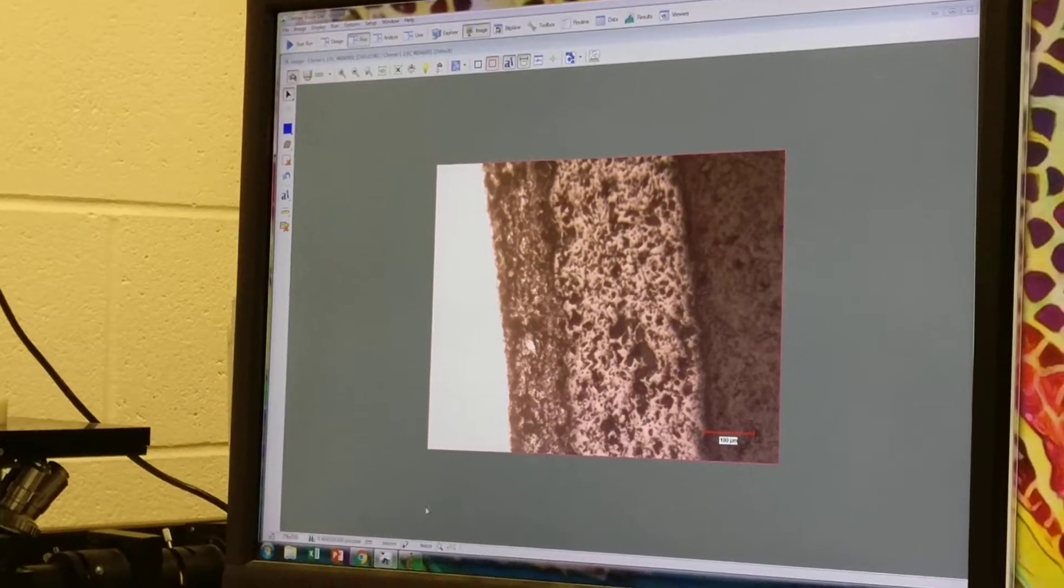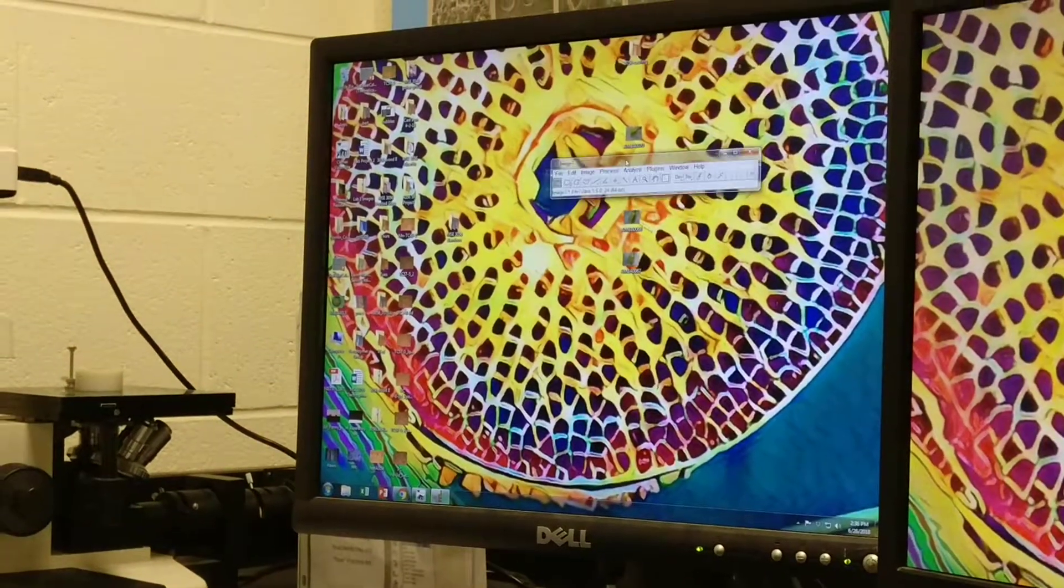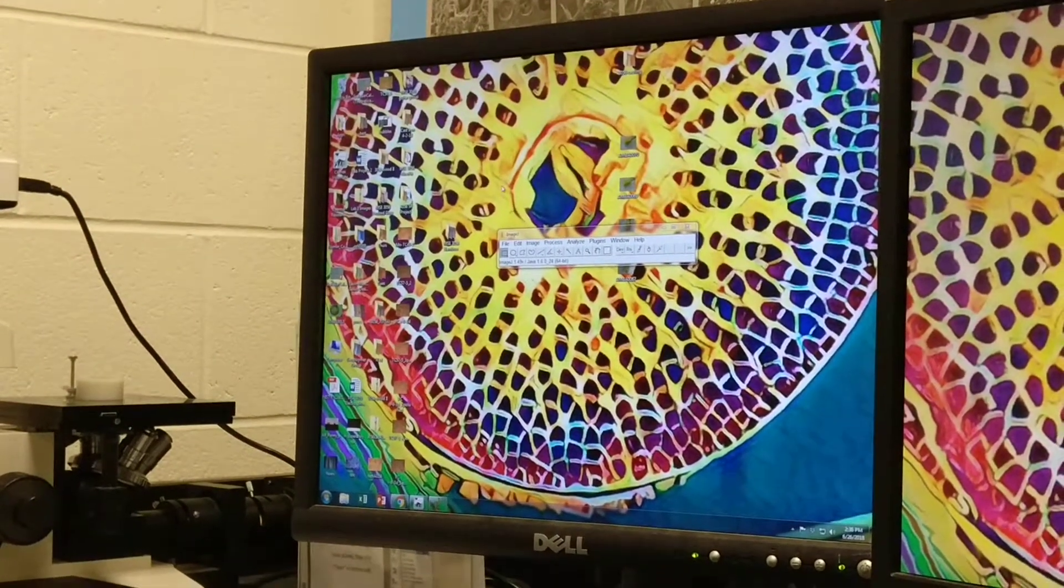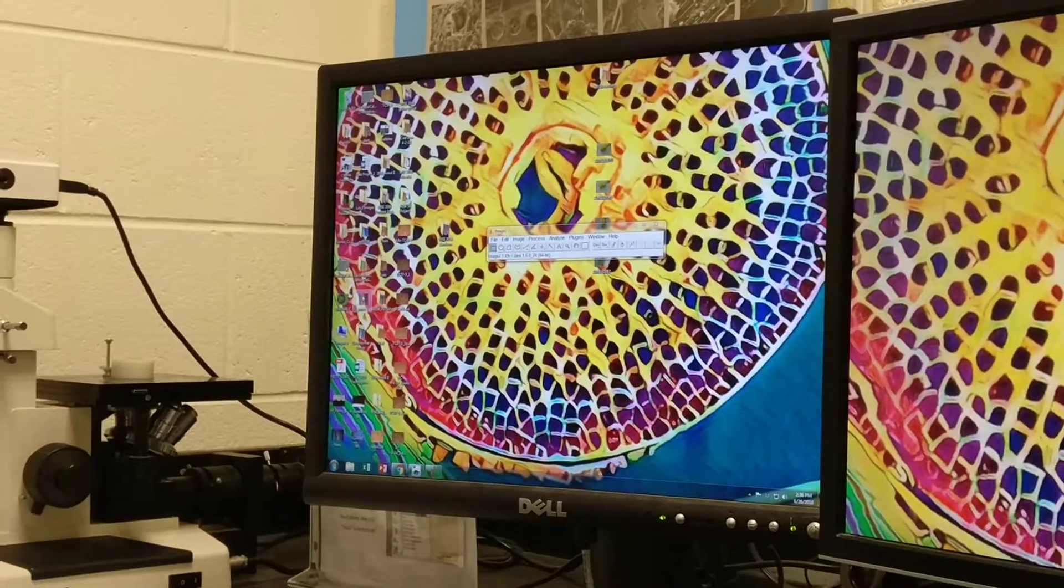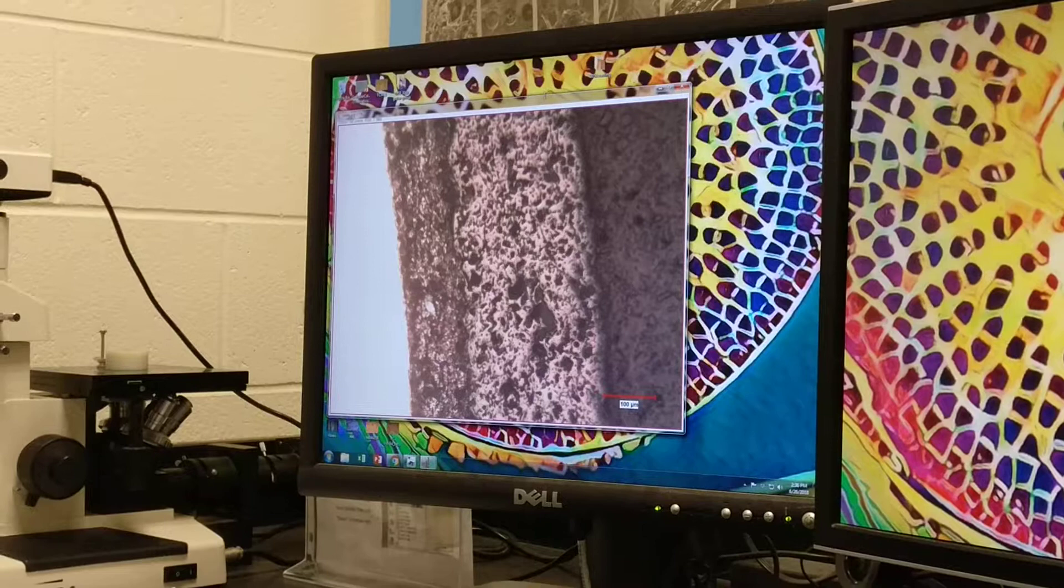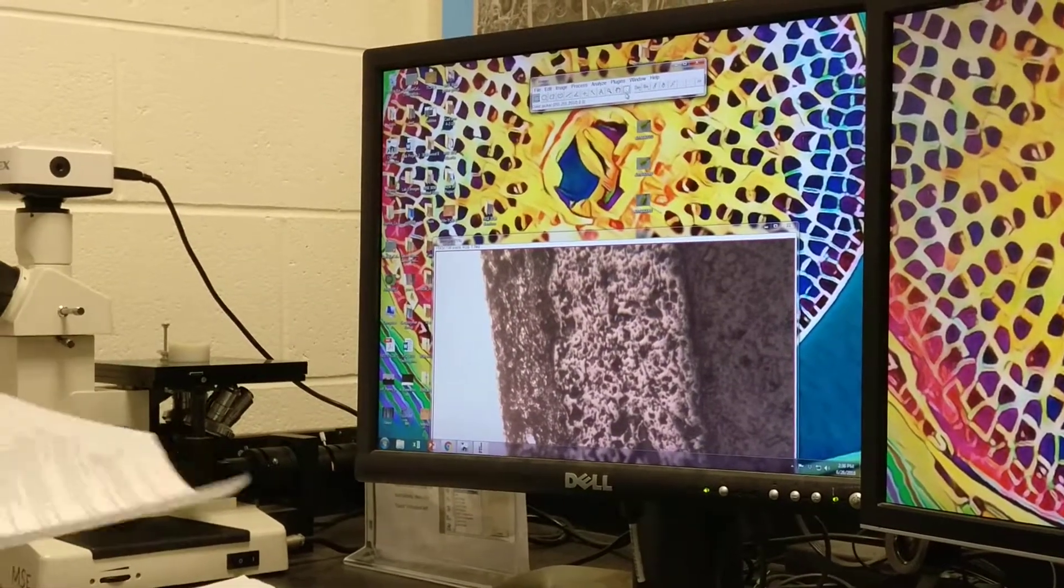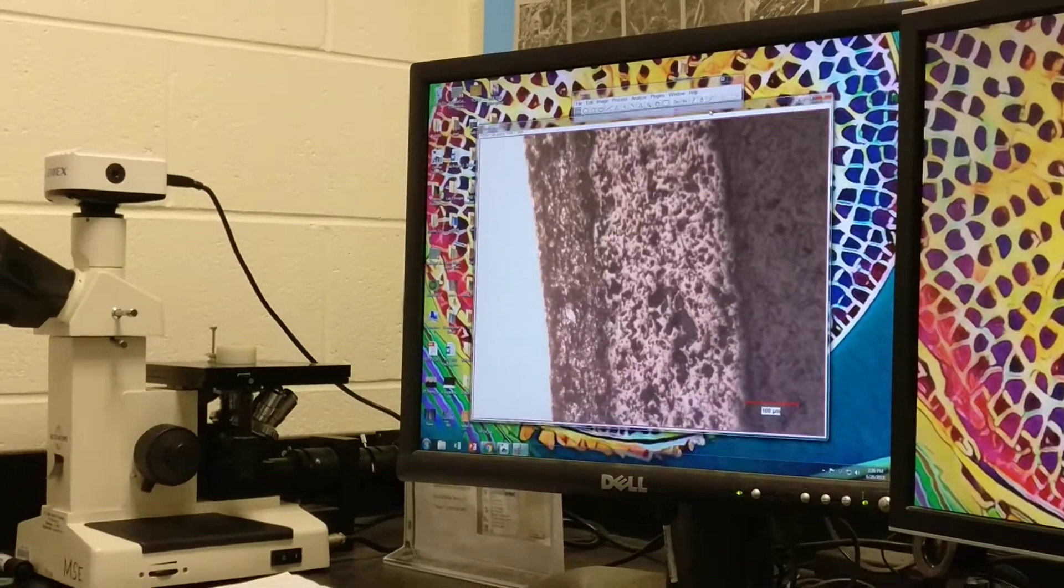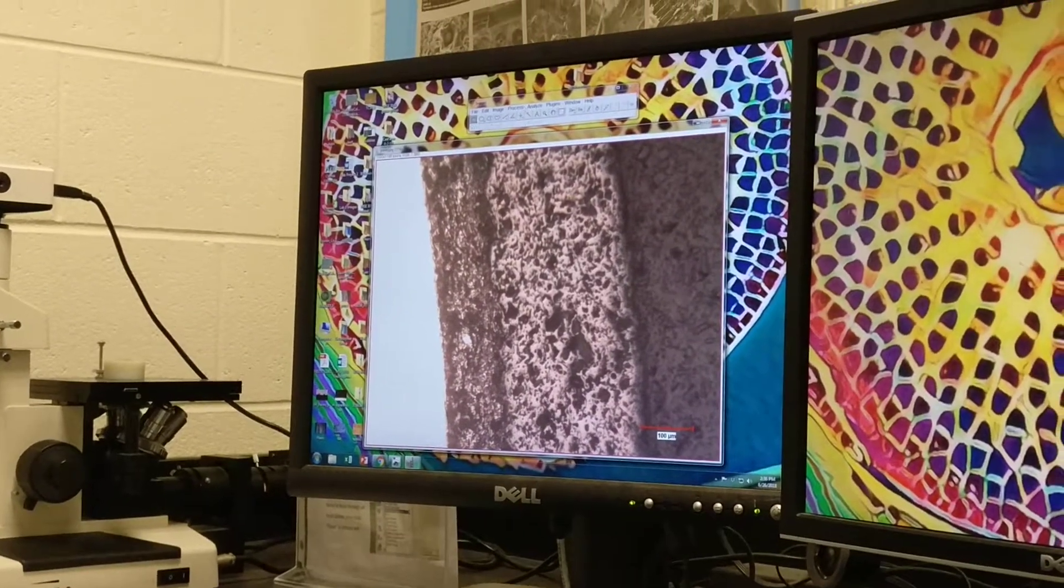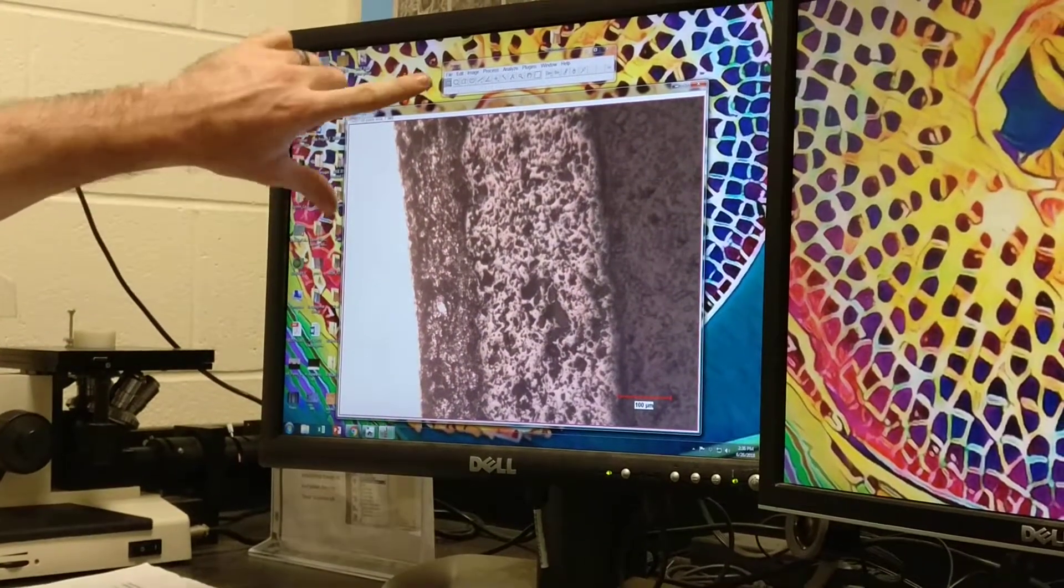The next thing we're going to do is open ImageJ software, which is this window here, and we're going to click and drag our image into that software. On the procedure page there's a list of things to do, but we're just going to do those in order.